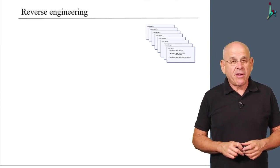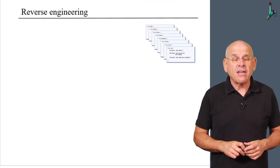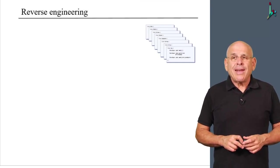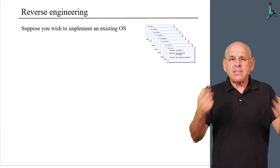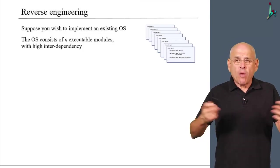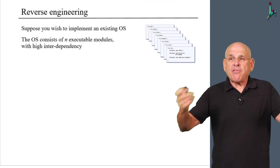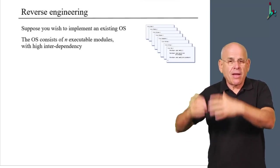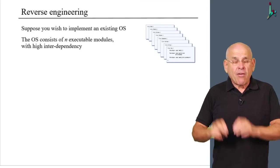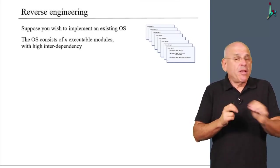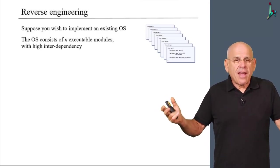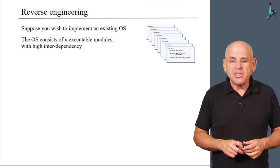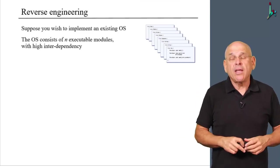Now, before we go on, I'd like to say a few words about reverse engineering, which is an important technique in the software developer's toolbox. So, let's assume that we want to implement some existing operating system, and let us assume further that the operating system naturally consists of several executable modules. These modules are stand-alone classes, for example, in some language like Java or C++. They are executable, so you don't have the source code, and they also interact with each other intensively, as often happens in a complex program like an operating system.